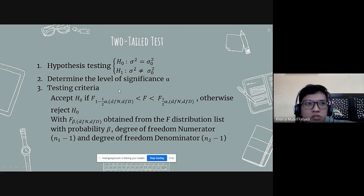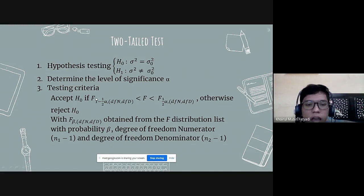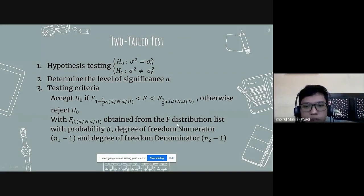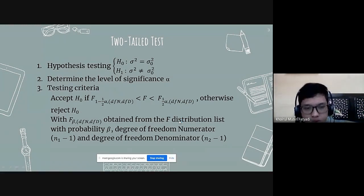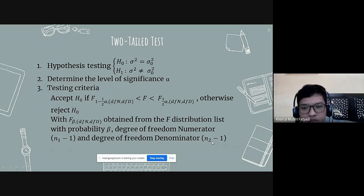The second step is to determine the level of significance alpha. The third step is testing the criteria: accept the null hypothesis if F of (1 minus half of alpha, dfn, dfd) is less than F, which is less than F of (half alpha, dfn, dfd); otherwise reject. We use the F distribution in this test. F with F-beta, dfn, dfd is obtained from the F distribution list with probability beta. You can find the F distribution table in Appendix 2, Table 8.